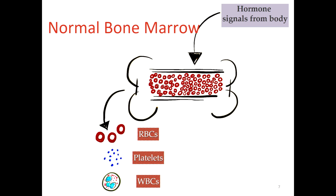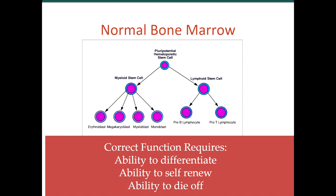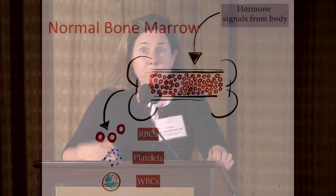A normal bone marrow gets signals from the body. Stem cells grow into red blood cells — that's what carries oxygen, and the absence of that makes anemia. They grow into platelets, which keep your blood clotting the right way. And they grow into white blood cells that allow your body to fight infections. For example, when you're pregnant and become anemic, a hormone created by the kidneys goes into the bone marrow and says, 'We're anemic, make more red blood cells.' Those stem cells respond by changing their proportion of red blood cells.